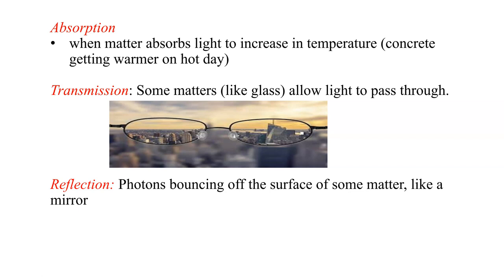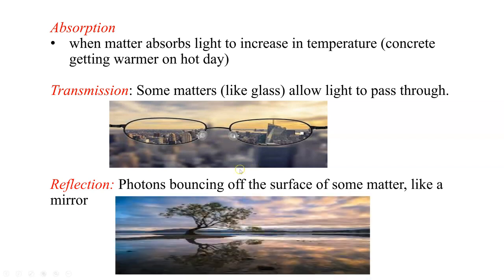Reflection, on the other hand, is photons bouncing off the surface of matter — a mirror is a good example. You can see a mirror image here: you have a tree and everything is being reflected by the water. Water can actually reflect light, but it can also absorb light. In a swimming pool, as you progress deeper into summer, it gets warmer because it's absorbing energy from the sun and increasing in temperature.